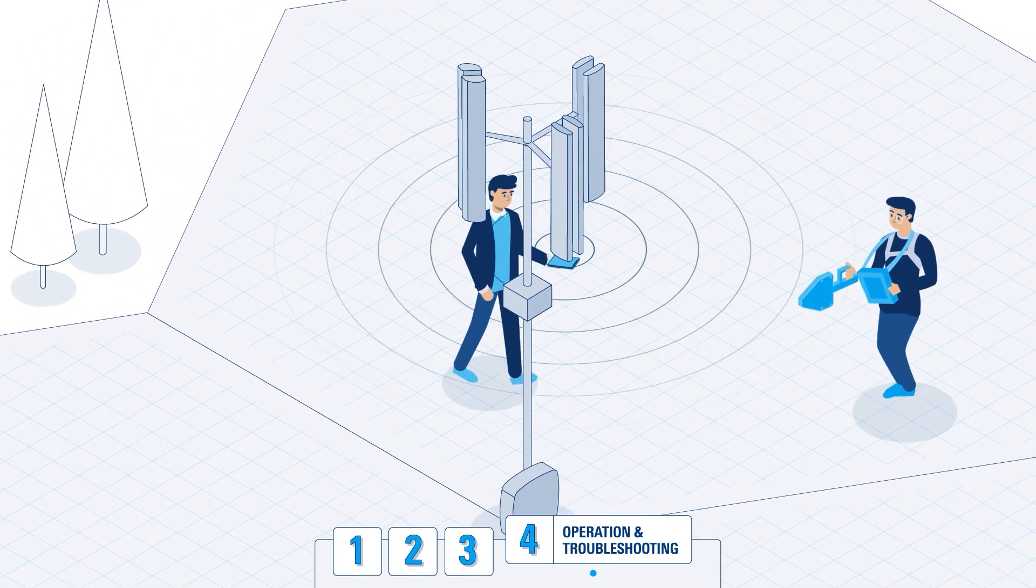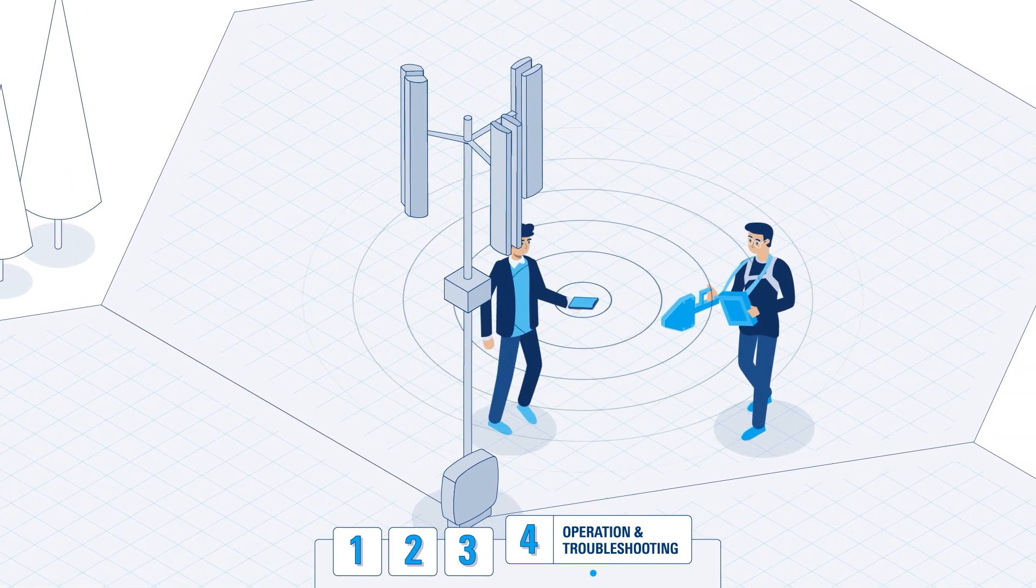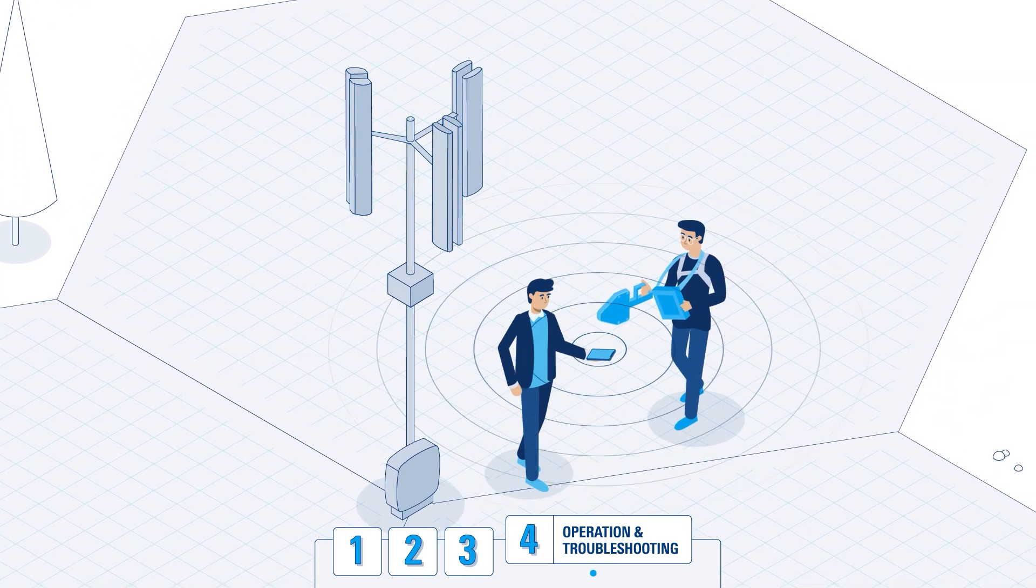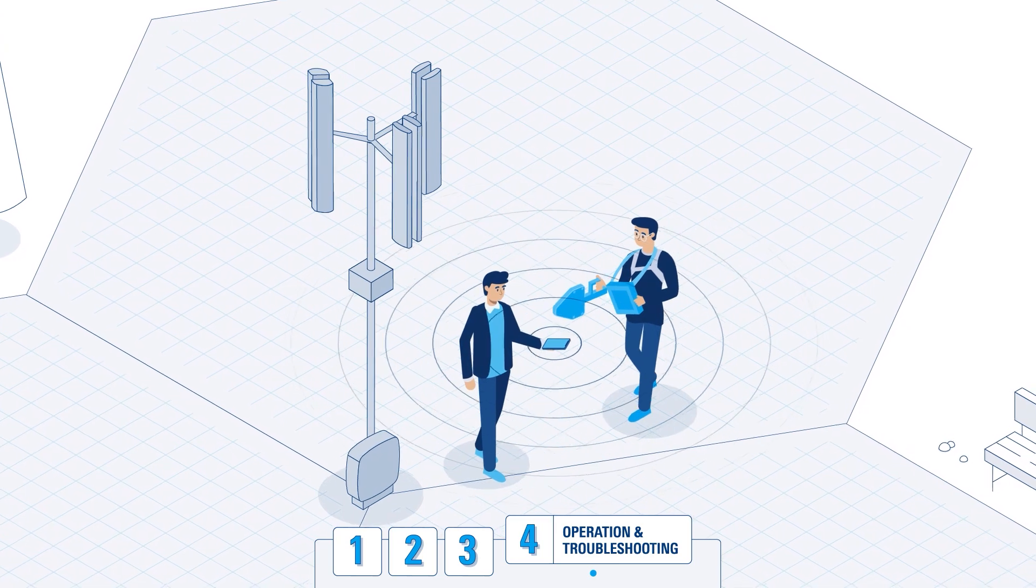To diagnose and resolve network problems, you can then conduct the same 5G site testing sequence with functional tests, spectral measurements, and signal decoding as in phase 2.